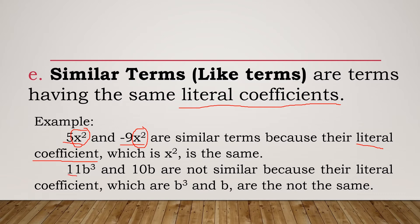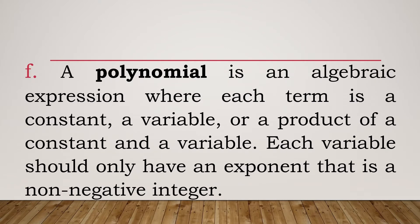On the other hand, consider 11b³ and 10b. Although they share the same variable b, they do not have the same literal coefficient — one has exponent 3 and the other has exponent 1. Therefore, they are not similar terms.